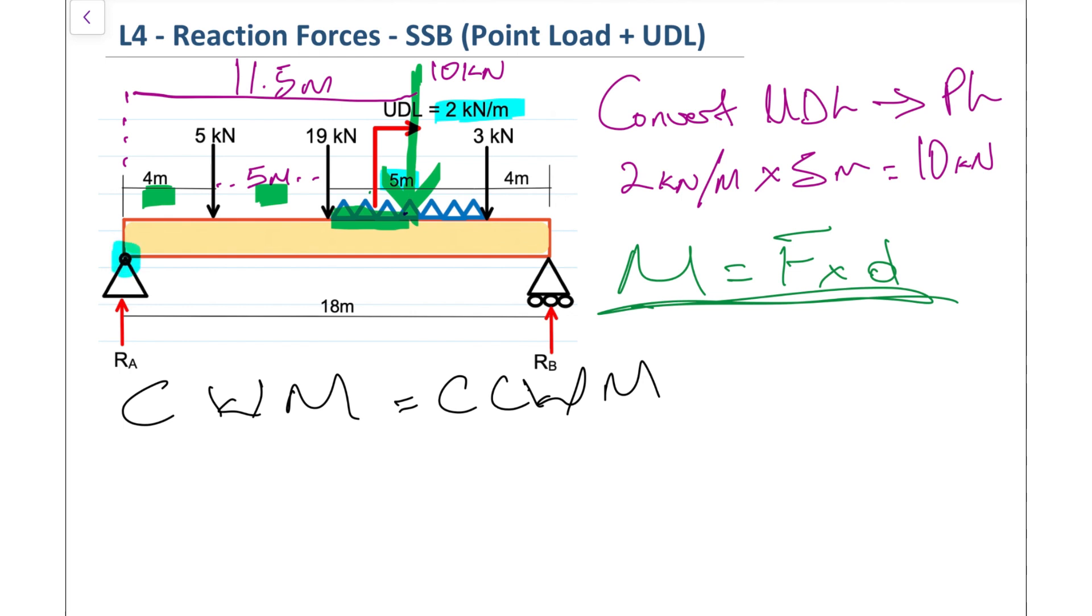The rotation will be taking place at RA, highlighted in blue. The first force we have is that 5 kilonewtons, highlighted in yellow. We're going to do 5 multiplied by 4—that's the perpendicular distance. That 5 kilonewtons is trying to rotate the system in a clockwise moment, so that's on the clockwise side. Moving on to that 19 kilonewtons, we have 19 multiplied by its perpendicular distance of 9 meters.